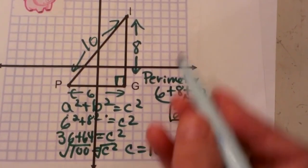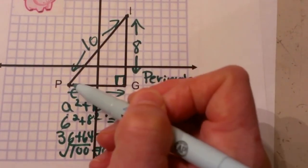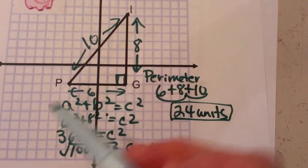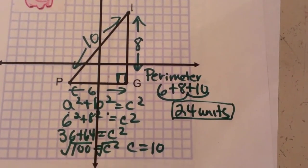Hope this video was helpful to show you how you can draw a right triangle in and find the distance just using the Pythagorean theorem.